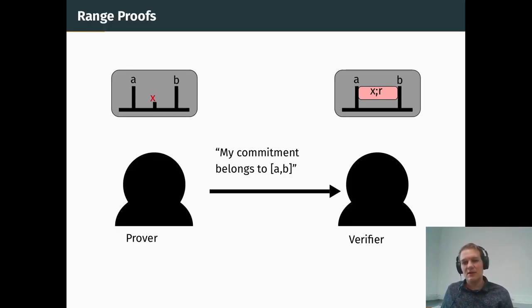First, let me tell you about range proofs. The idea is that you have some integer value that you don't want to reveal, for instance the amount of money on your bank account, but you want to prove that this value belongs to some range, that you have enough money to buy something. To do so, you will commit to this value to a verifier, and then you will have to give it a proof that it belongs to the intended range, and the verifier must be convinced in the end.